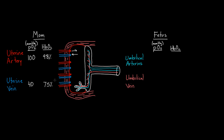On the baby's side, the numbers are much lower. The umbilical arteries have dissolved oxygen estimated at about 18 mmHg, and only about 45% of their hemoglobin — remember, they have hemoglobin F — is bound to oxygen. On the umbilical vein side, it's about 28 mmHg, a little bit higher, and about 70% is bound to hemoglobin.